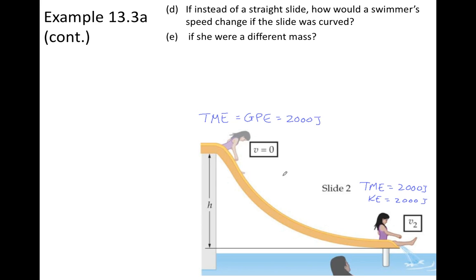The only real difference is that the curved slide is going to take less time, because the swimmer picks up speed earlier and maintains that large fast speed throughout the motion. But nothing about the energy changes. So there is no change in speed due to changing the shape of the track.